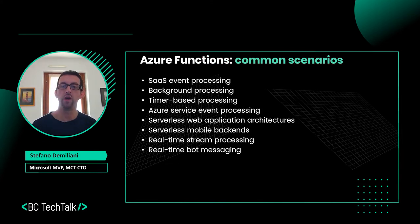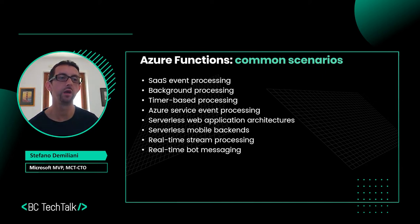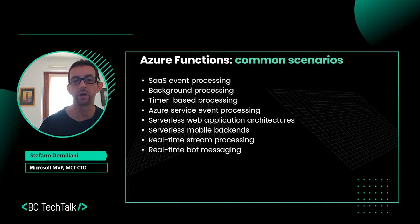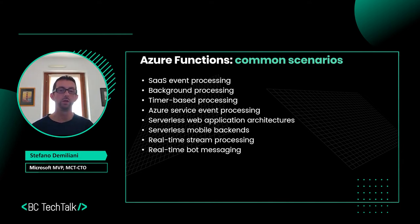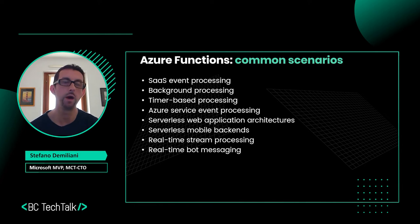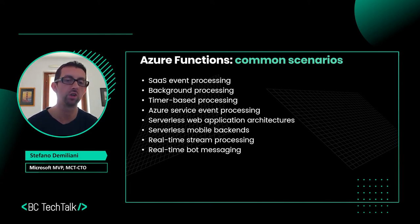Common scenarios for Azure Functions include SaaS processes — creating code that runs in the cloud and reacts to events such as HTTP events or Azure-related events. Azure Functions are great for background processing and timer-based processing with the timer trigger. They are a fundamental building block for creating serverless web applications and mobile backends, and are important for real-time stream processing or bot messaging, because Azure Functions can react to Azure Event Hub streams.